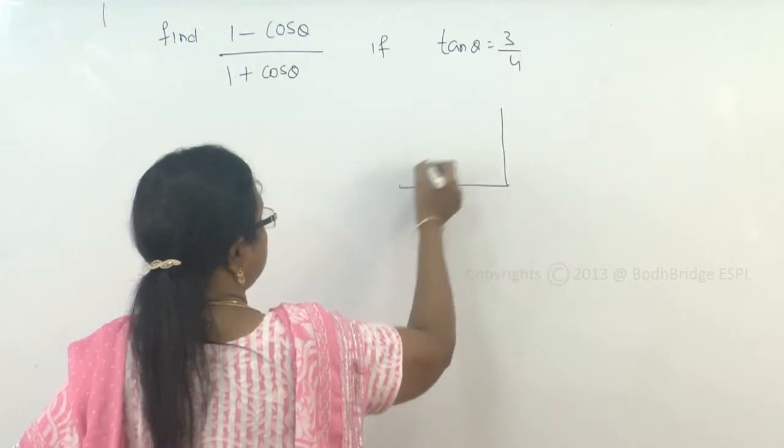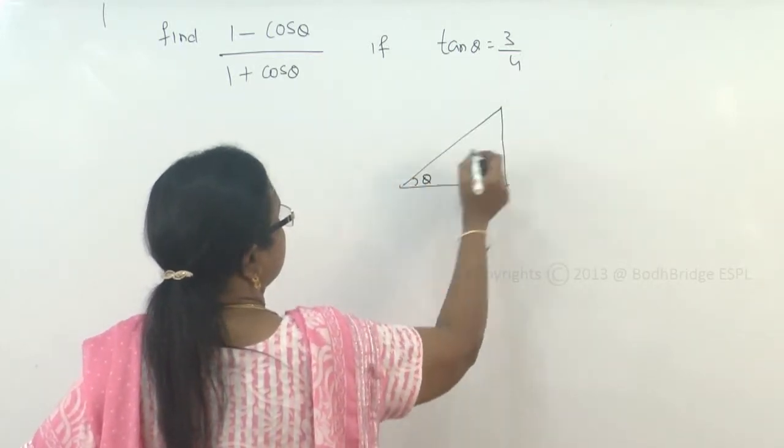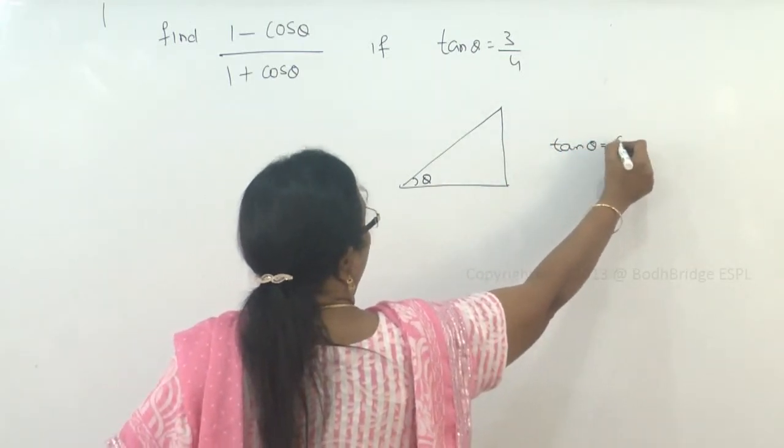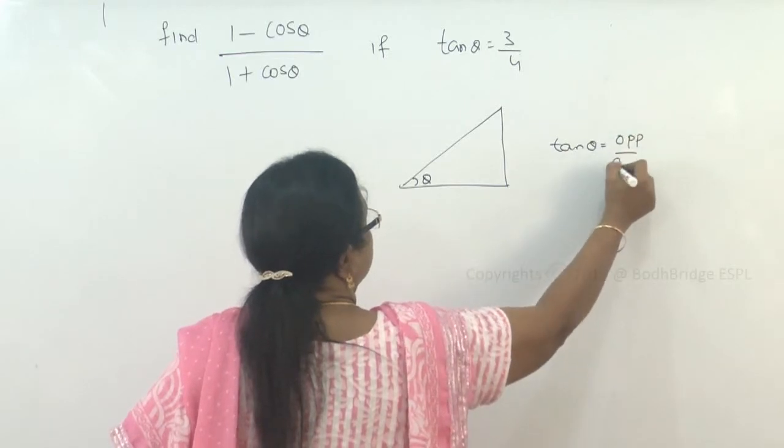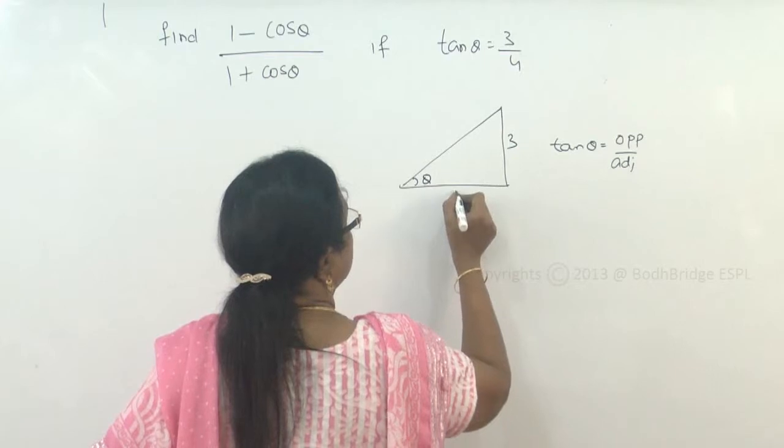We can form a triangle with the angle theta here and tan theta is equal to opposite side by adjacent side. So, this is the opposite side that is 3 and the adjacent side is 4.